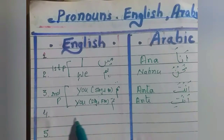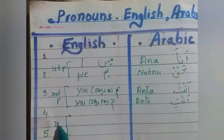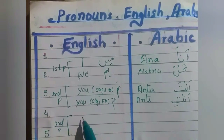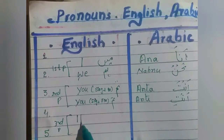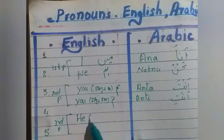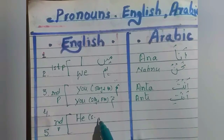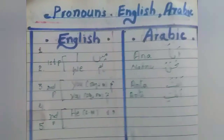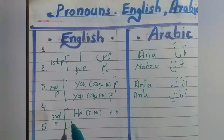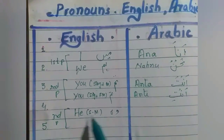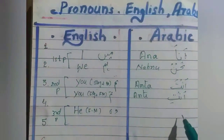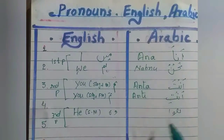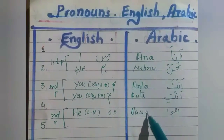Next is third person, singular. For singular person, wahid ke liye — 'he' in English, 'wo' in Urdu. In Arabic, the third person singular male is 'huwa'.